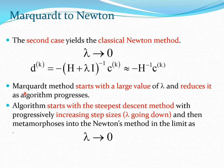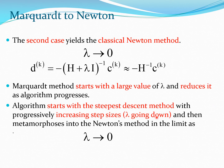So what the Marquardt method does is that it starts with a large value of lambda and reduces it as you go on. The method basically starts with the steepest descent type of method, and as the lambda value keeps going down, the step sizes keep going up, and this method then metamorphoses into the Newton method as lambda tends towards 0.